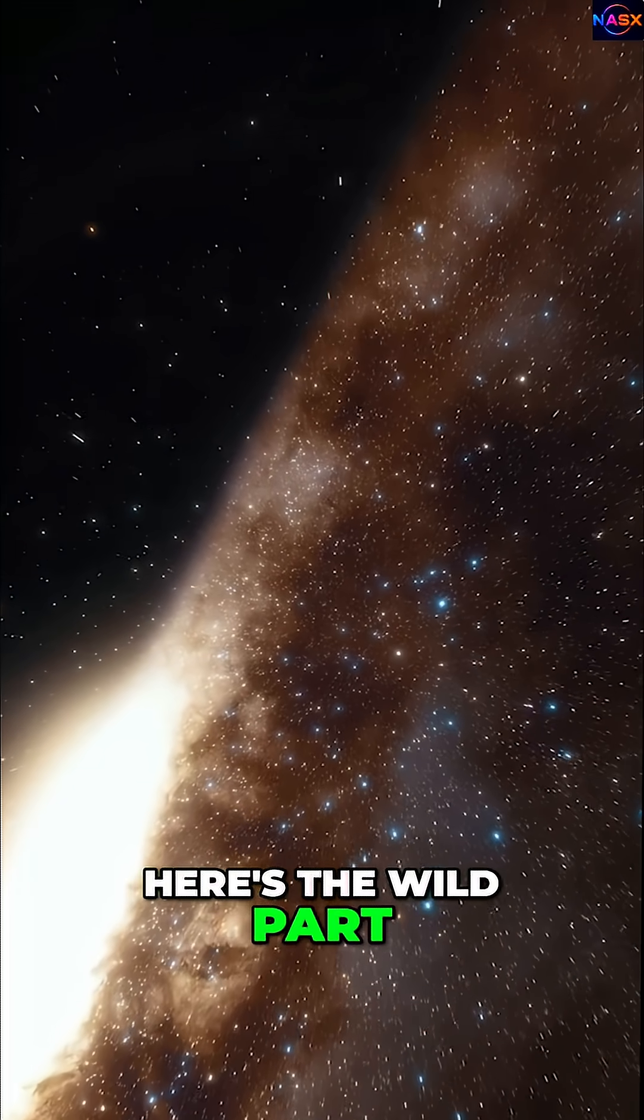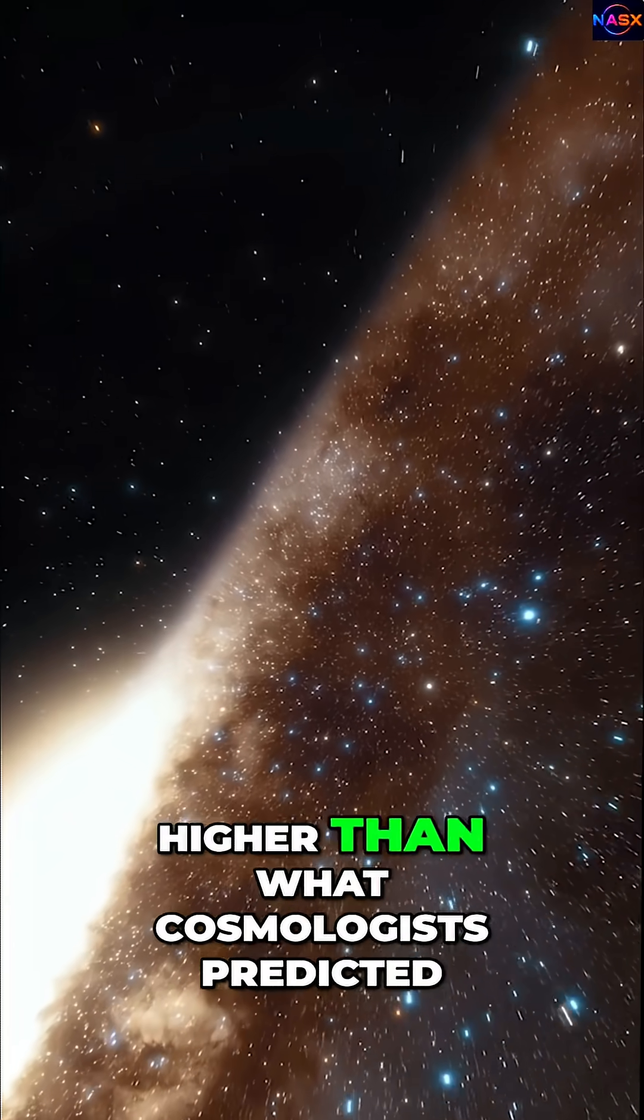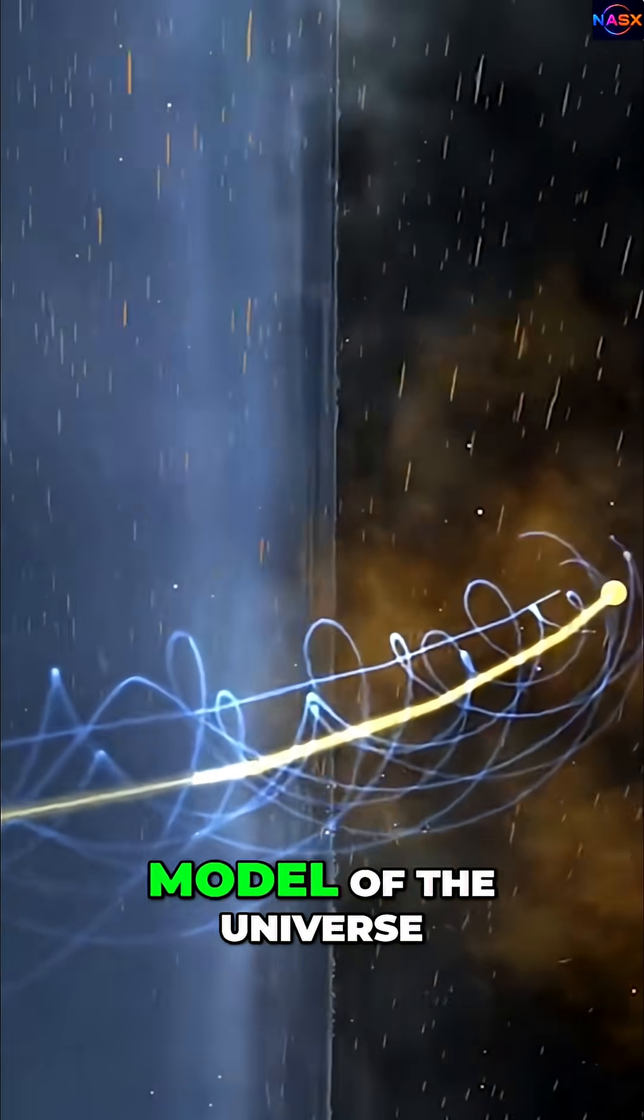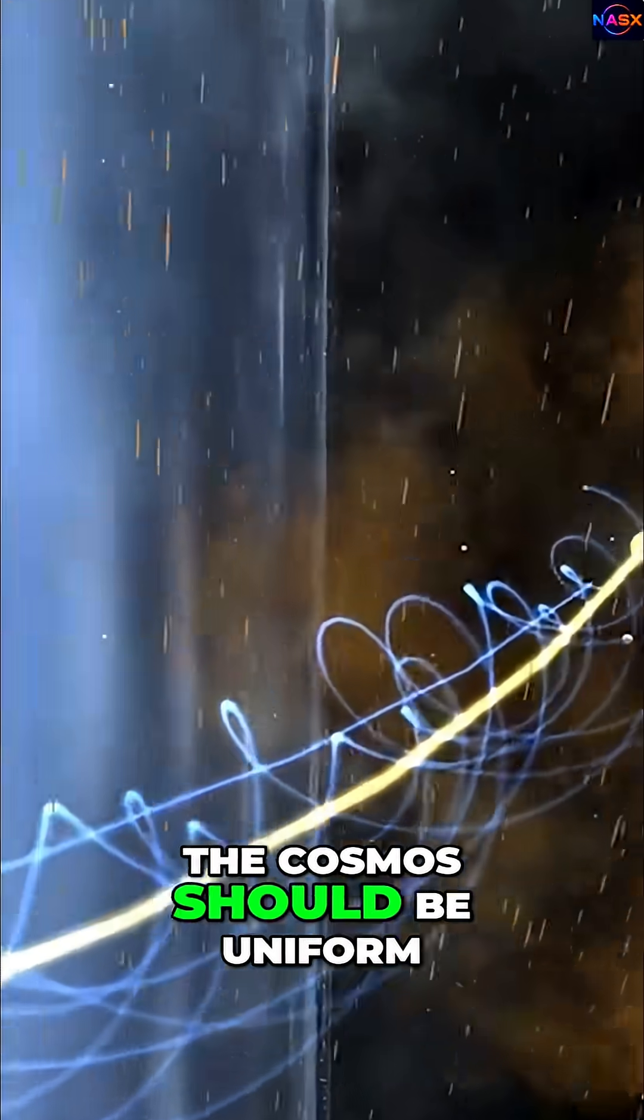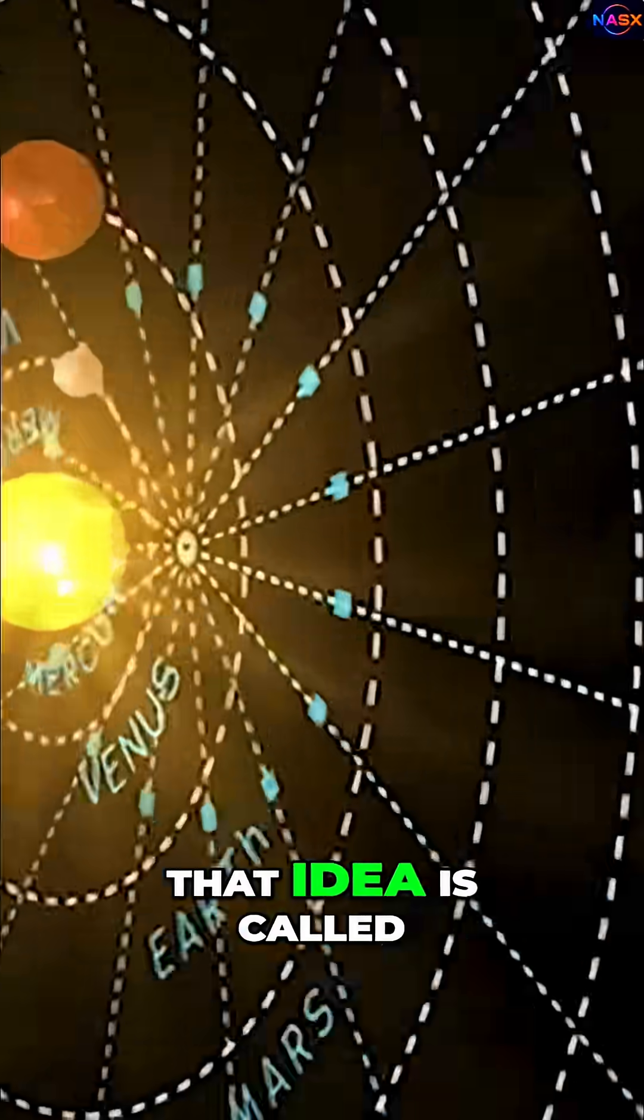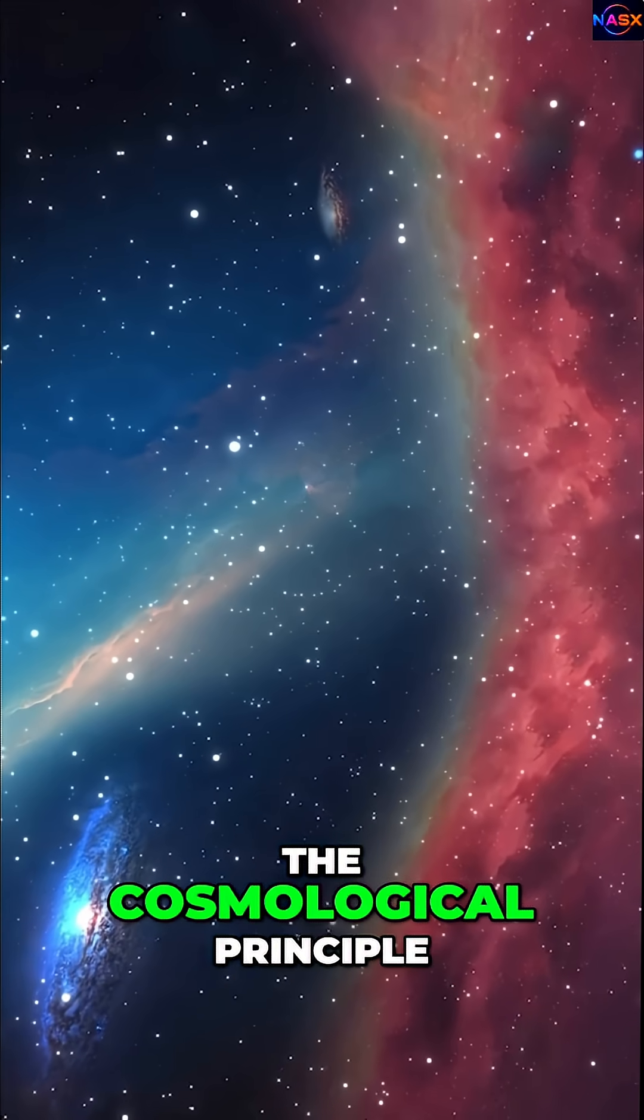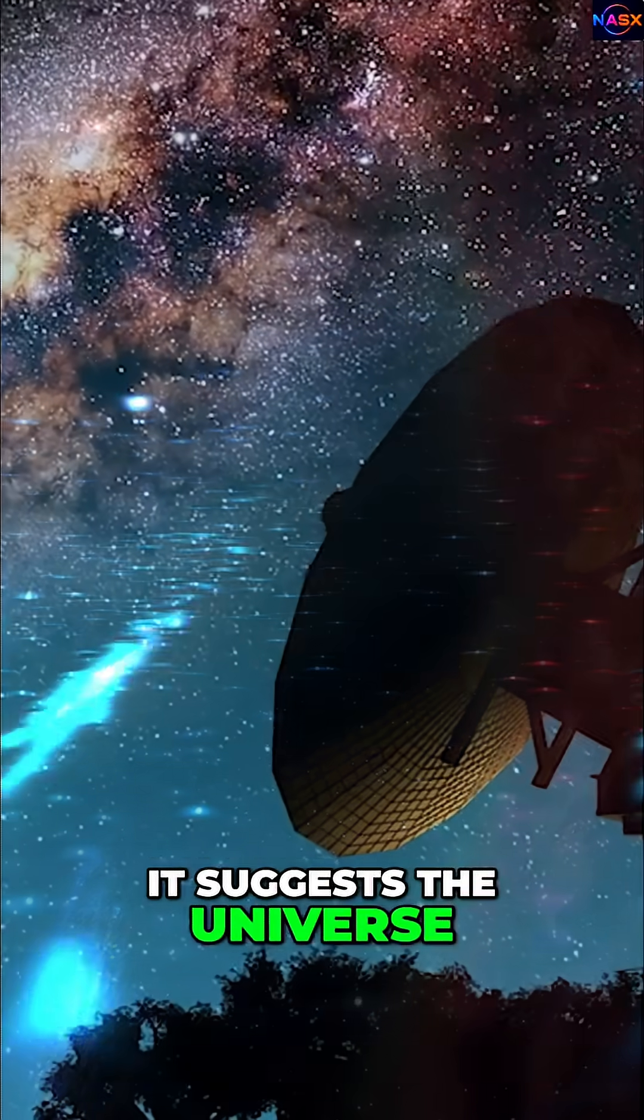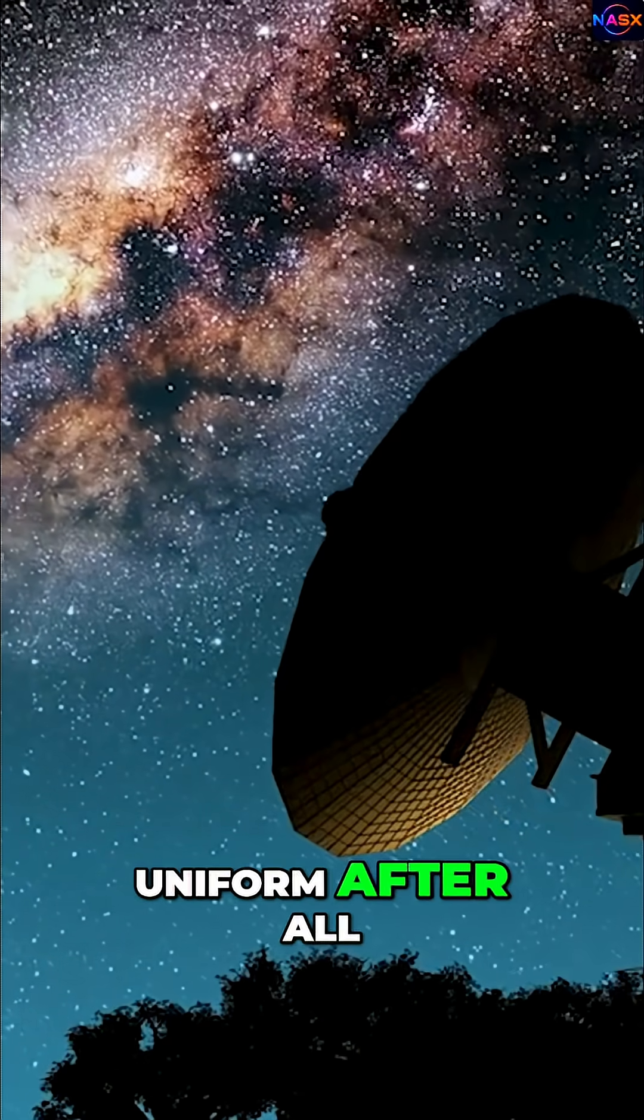Here's the wild part. This speed is way higher than what cosmologists predicted. According to the standard model of the universe, the cosmos should be uniform, the same in every direction. That idea is called the cosmological principle. But this measurement? It suggests the universe might not be so uniform after all.